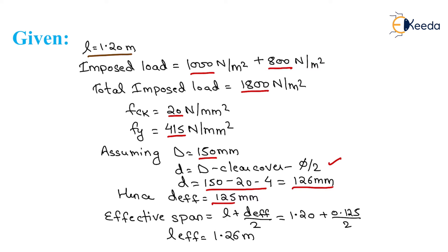Effective span equals L plus D_effective by 2. Here, L is 1.2 m and D_effective equals 0.125 m. We get effective span equals 1.26 meter.